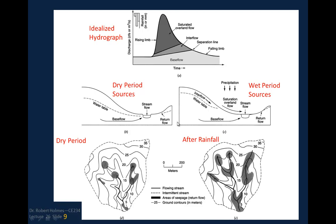During dry periods, stream flow sources include the base flow component and return flows such as effluent from a wastewater treatment plant. During wet periods, you have precipitation, saturated overland flow, interflow, and a rising water table. You can see in the schematic that during dry periods the water table just intersects the stream for base flow, whereas during wet periods the water table is much higher, with greater seepage areas providing flow into the stream system.